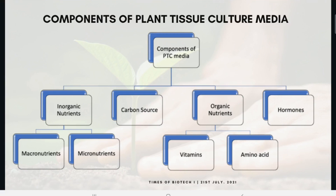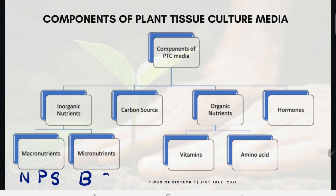Inorganic nutrients are divided into two: macronutrients and micronutrients. As the name suggests, macronutrients are added in slightly higher concentration than micronutrients, while micronutrients are added in lesser amounts. Examples of macronutrients are nitrogen, phosphorus, and sulfur. Examples of micronutrients are boron, cobalt, iron, and zinc.